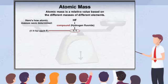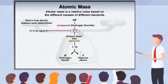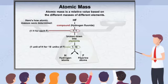However, when hydrogen fluoride is broken down into the atoms that make up the compound, the amount of fluorine left is 19 times heavier than the remaining hydrogen. This can only occur if each fluorine atom weighs 19 times as much as each hydrogen atom. Based on this system, hydrogen would have a relative mass of 1 unit and fluorine would have a relative mass of 19 units.